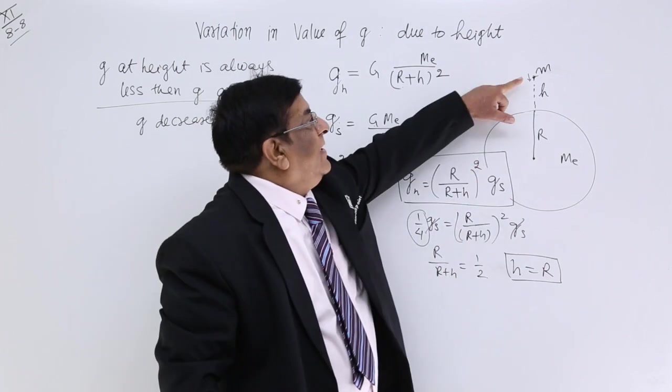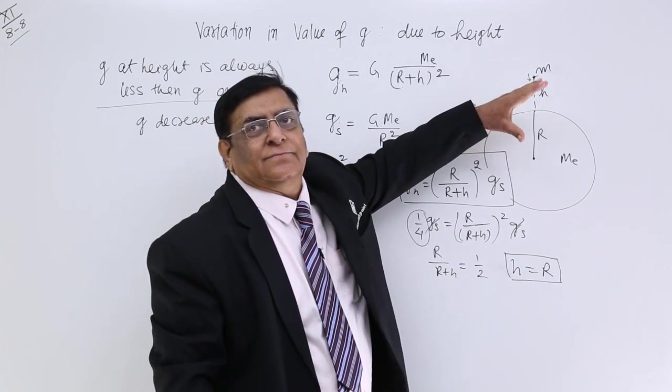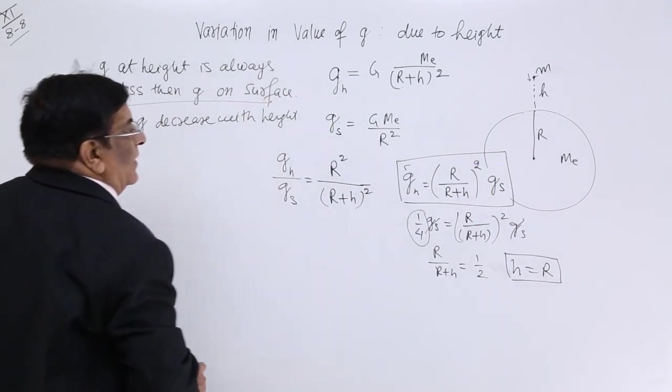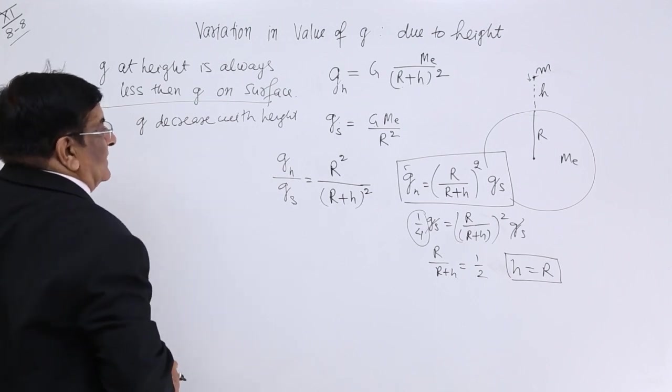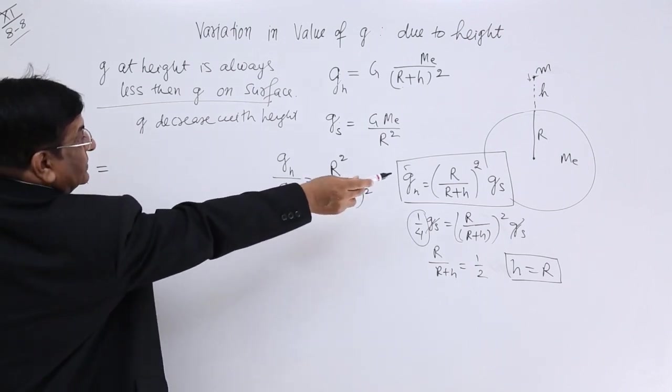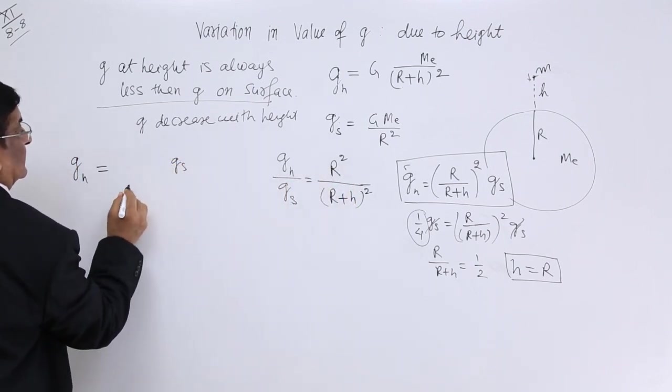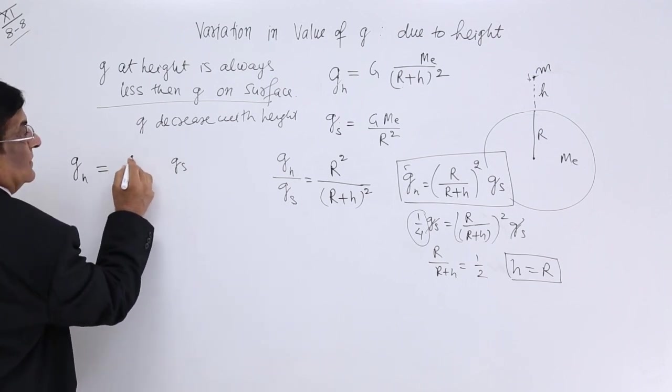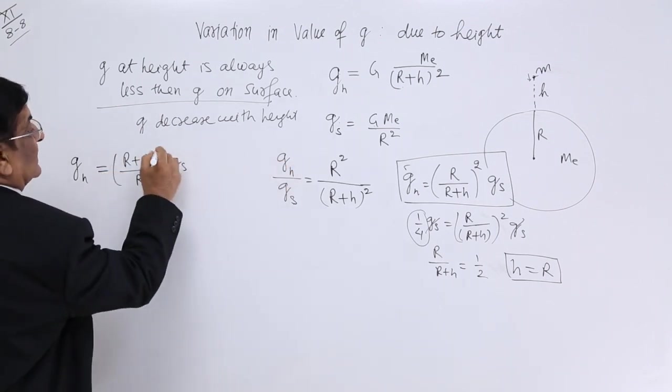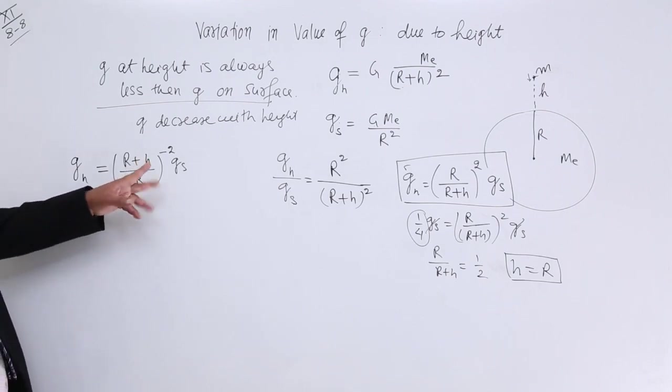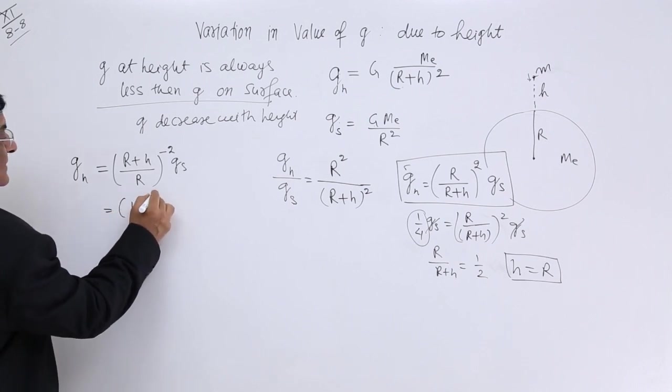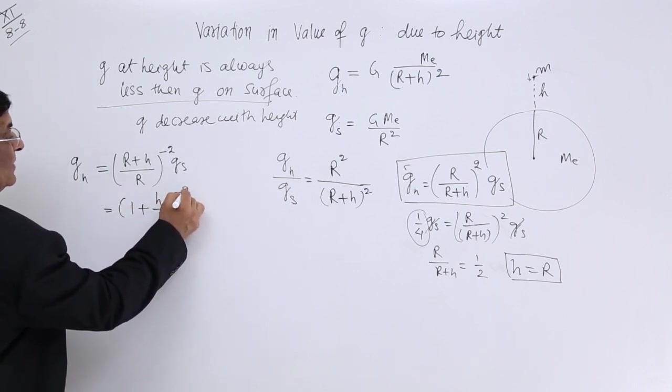We have another shortcut. If this height is very small, close by, then we can derive this formula differently. See how we can derive it. This is g_h is equal to g_s, and this we can write as R plus H upon R and make it minus 2. That can be done.